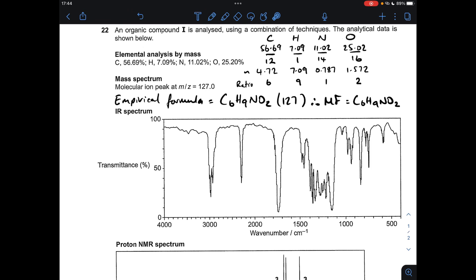Moving on to the main part of the question, where I've got to come up with a structure for I that's consistent with all the evidence. The first thing I've done is process this elemental analysis by mass, that's just an empirical formula calculation. You put the percentage over the relative atomic mass, that gets you the moles, divide by the smallest gets you the ratio. So the empirical formula is C6H9NO2, which has an MR of 127. We compare that with the MR of the molecule, presented as the molecular ion peak at M over Z 127. They're the same, so the molecular formula is also C6H9NO2.